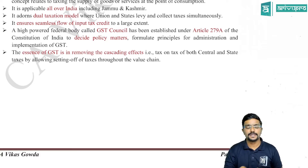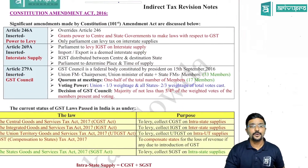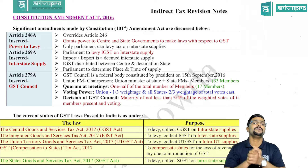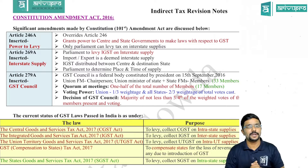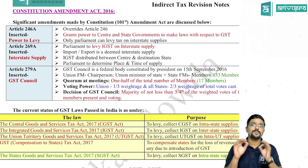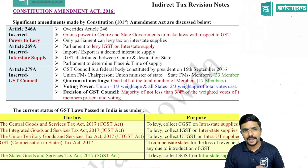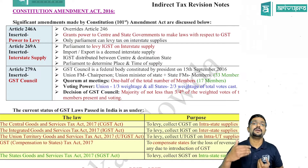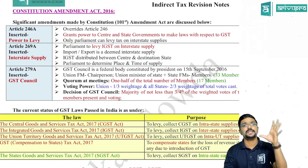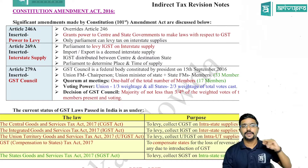To levy GST, the power was not originally in the constitution. First, a constitutional amendment was brought in to give the power to levy and implement GST, and only then was the GST law implemented. The three main articles introduced in the constitution for GST are: Article 246A, which gave the government the power to make laws with respect to GST. Article 246A overrides Article 246, because Article 246 does not include GST.